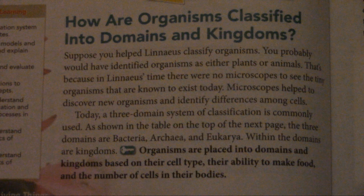As shown in the table at the top of the next page, the three domains are Bacteria, Archaea, and Eukarya. Within the domains are Kingdoms. Organisms are placed into domains and kingdoms based on their cell type, their ability to make food, and the number of cells in their body.